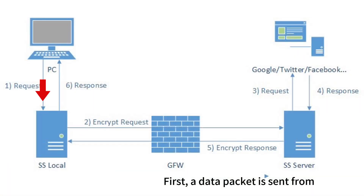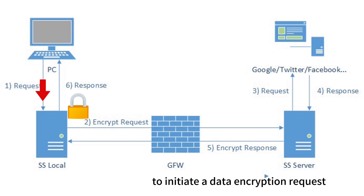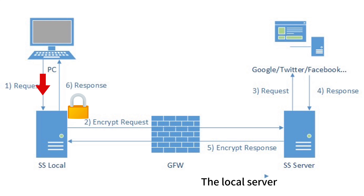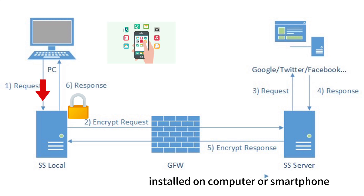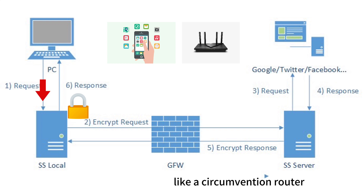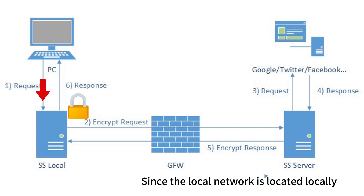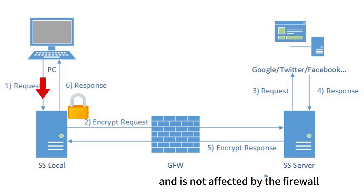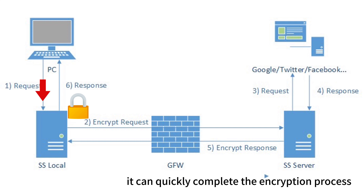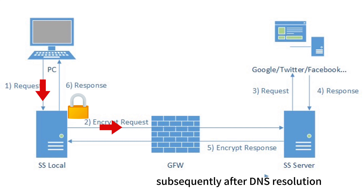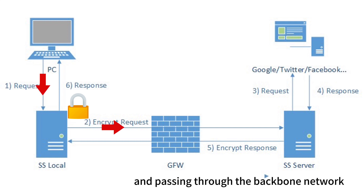First, a data packet is sent from the local computer to initiate a data encryption request to the local Shadowsocks server. The local server can be the Shadowsocks software installed on a computer or smartphone, or it can be a hardware device like a circumvention router or software router. There are various forms, but the logic is consistent. Since the local network is not affected by the firewall, it can quickly complete the encryption process.